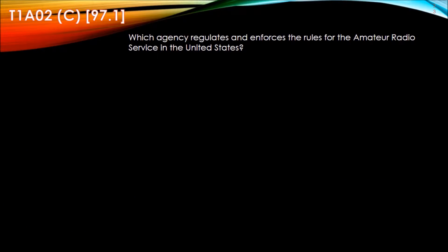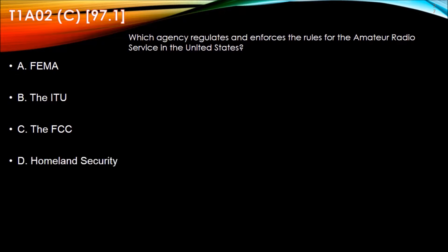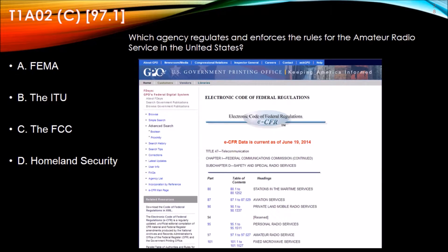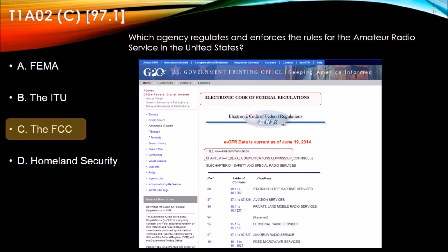Moving to question T1A02: Which agency regulates and enforces the rules of the amateur radio service in the United States? The answers are A. FEMA, B. the ITU, C. the FCC, D. Homeland Security. Referring back to the Code of Federal Regulations, Telecommunications Title 47, we see Chapter 1 is about the Federal Communications Commission. So the answer is the FCC.